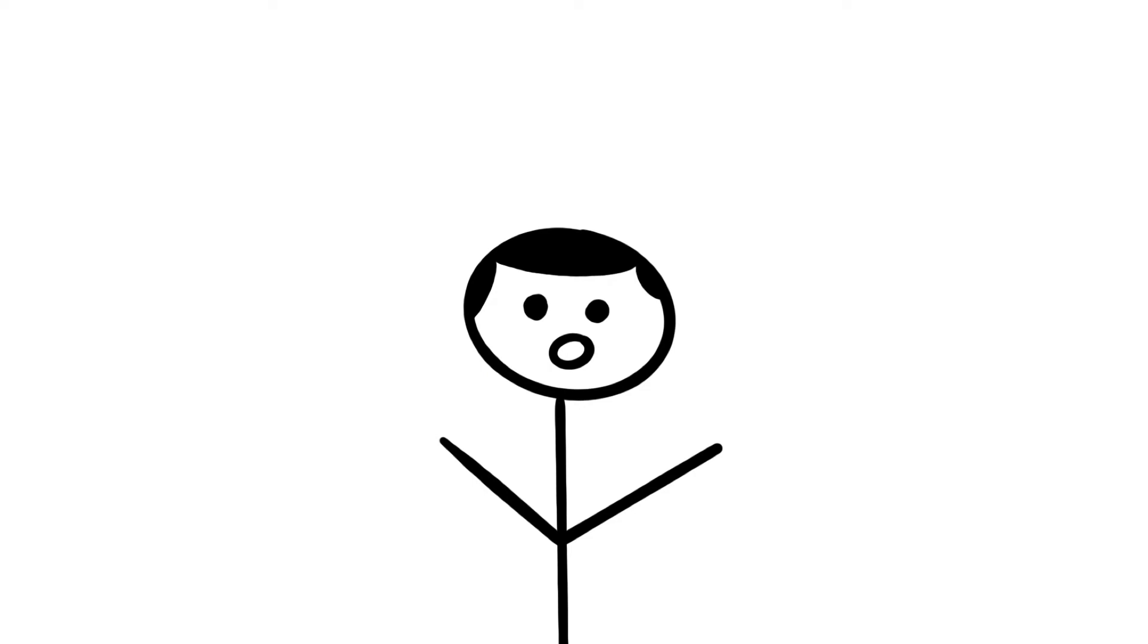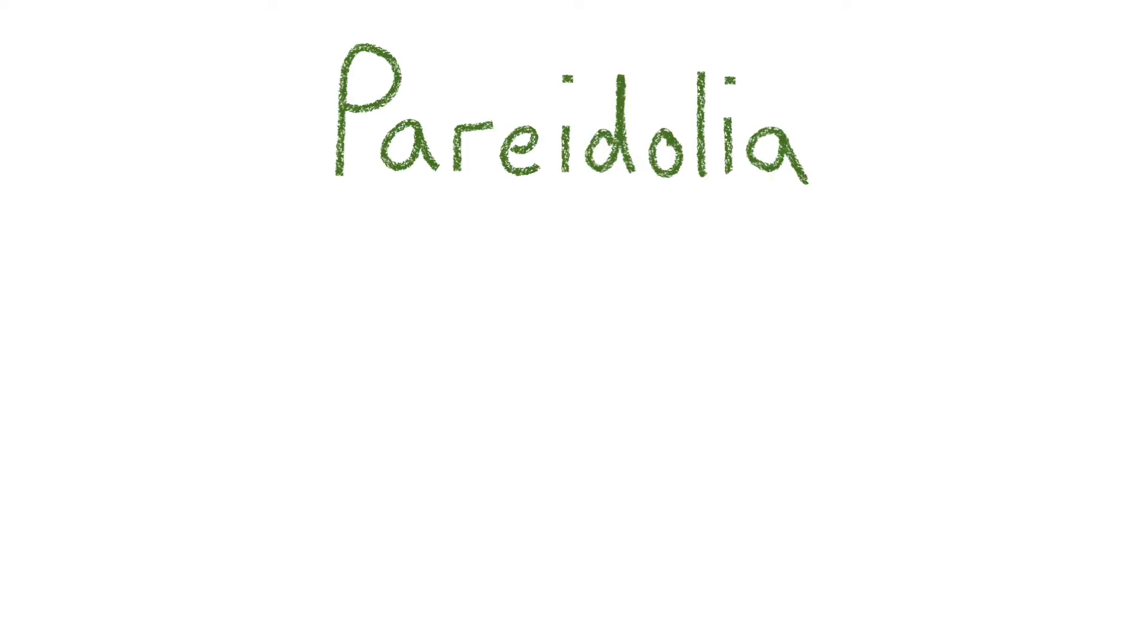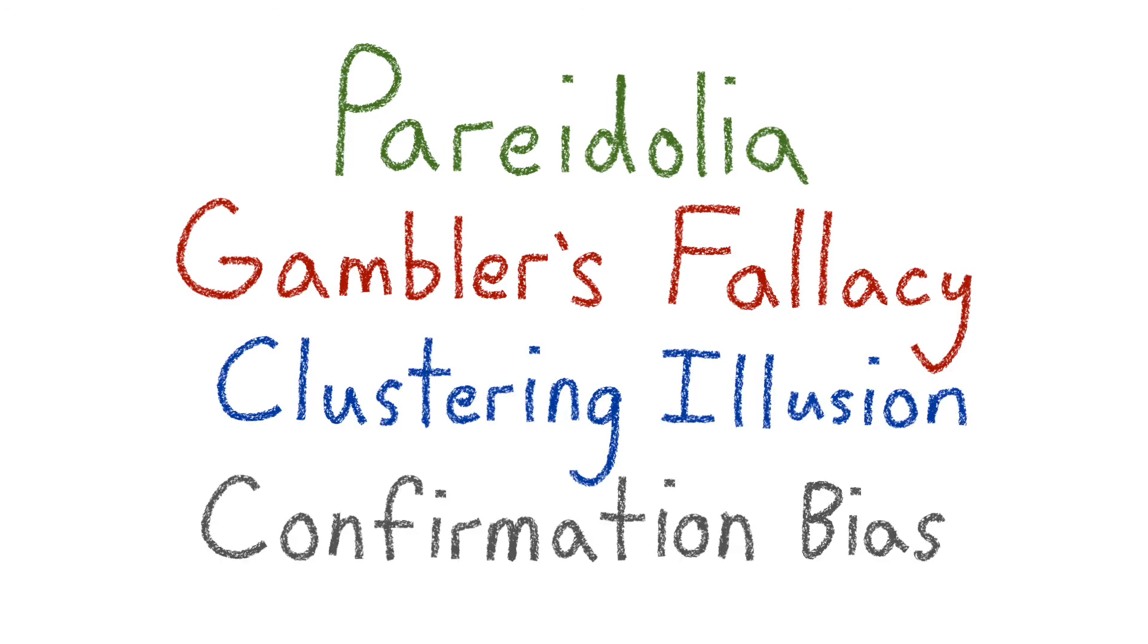To better understand this, let's look at four main categories of apophenia: Pareidolia, gambler's fallacy, clustering illusion, and confirmation bias.